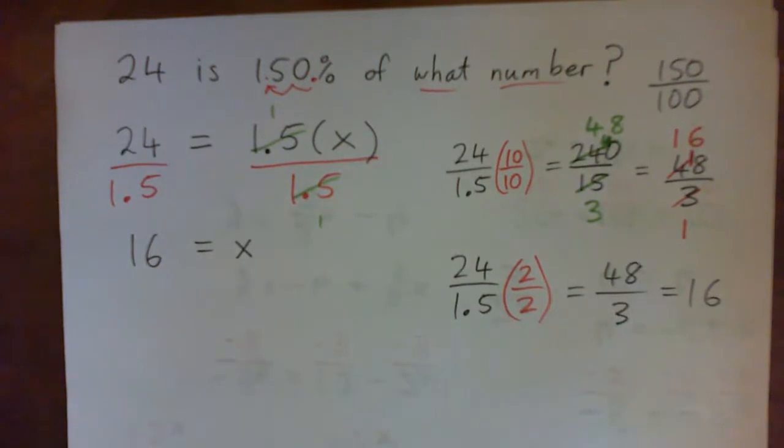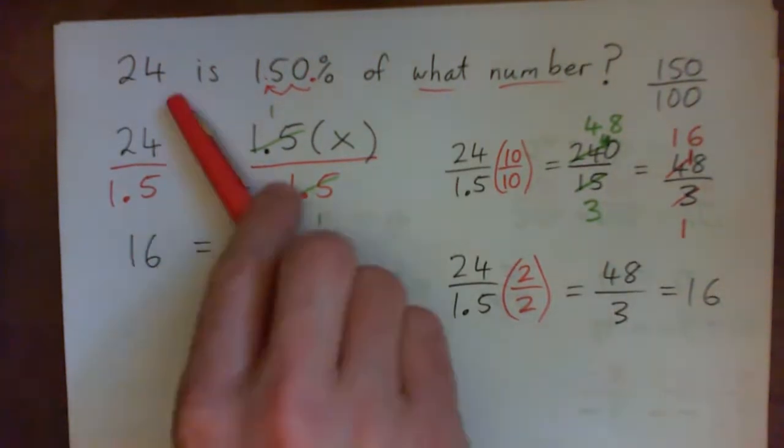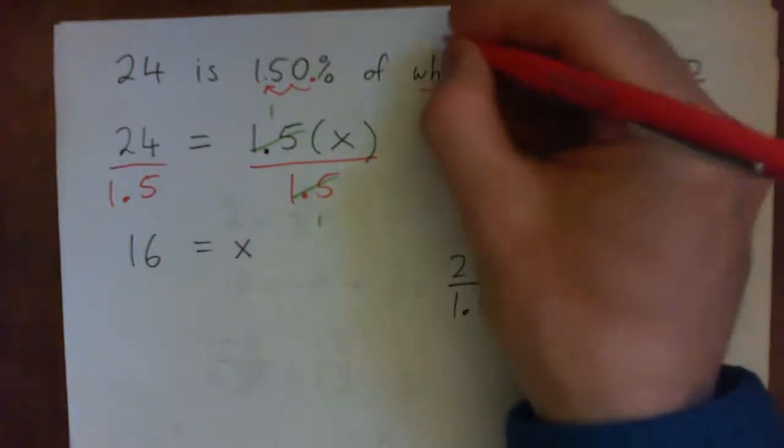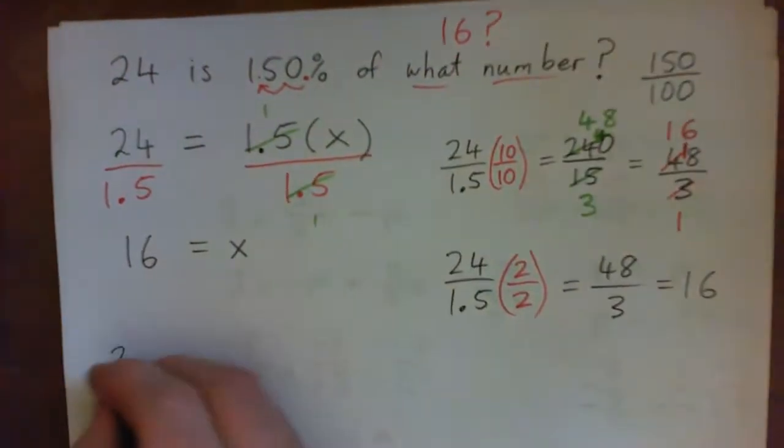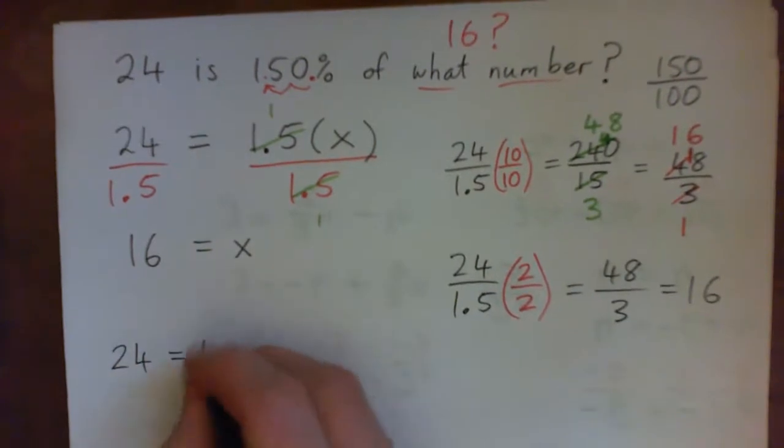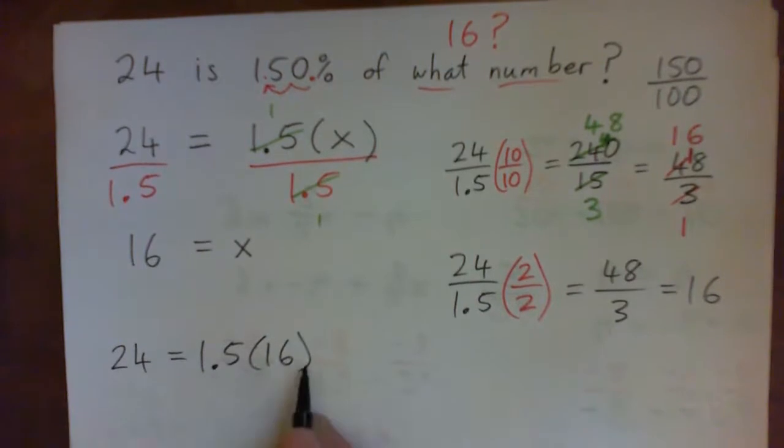So X equals 16. Does that make sense? If you think about the problem, 24 is 150% of 16. We could check that. 24 is 1.5 times 16. 150% of 16. 16, 1.5.